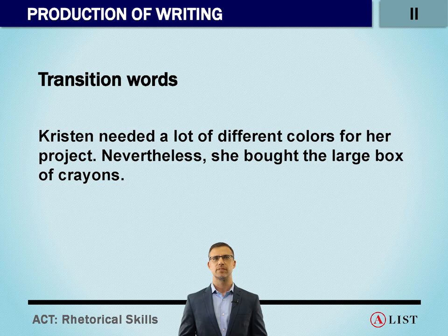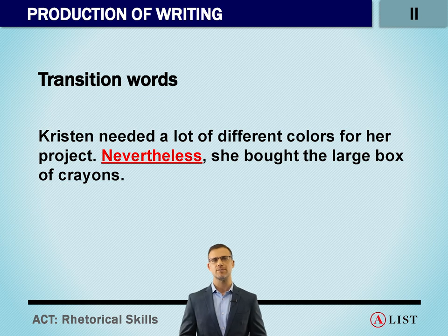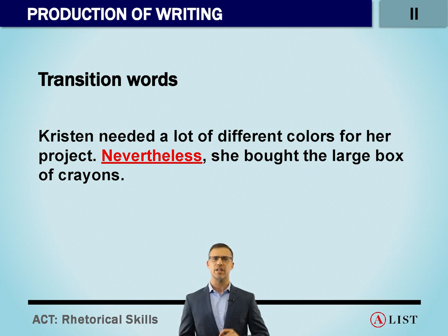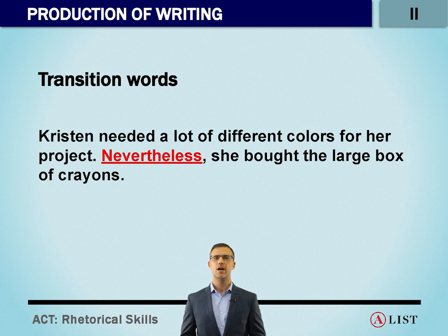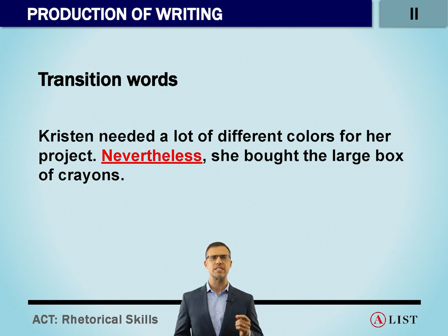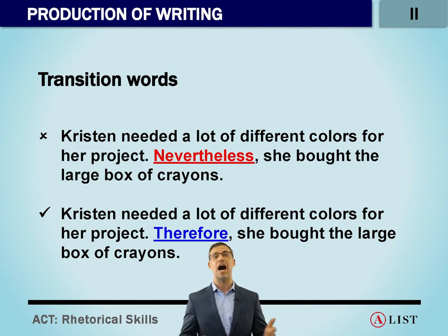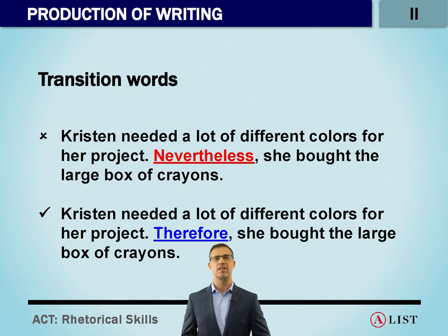Let's take a look at Kristen. Kristen needed a lot of different colors for her project. Nevertheless, she bought the large box of crayons. In the first part, she needs a lot of colors, and in the second part, because of that first part, she buys a large box of crayons. This is cause and effect — what happens in the first part causes the second part. So 'therefore' fits better. Therefore has an element of causality: I needed a lot of different colors; therefore, I had to buy the large box of crayons.